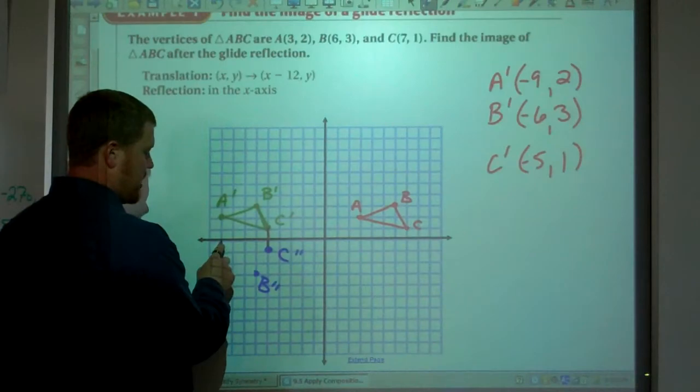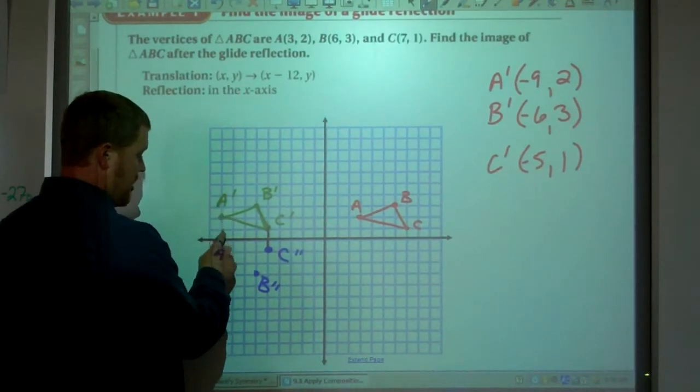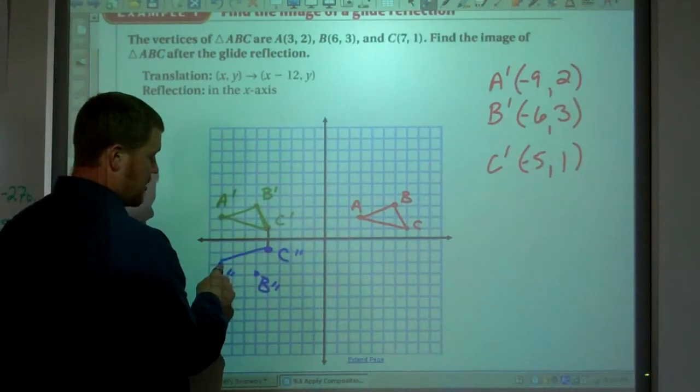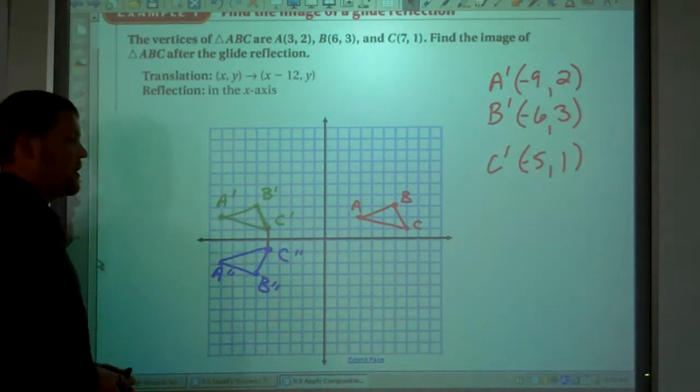A is 2 away from the x-axis. So A double prime, excuse me, A prime is 2 away. A double prime should be 2 away as well. And there is the reflection through the x-axis. So the glide and then reflection.